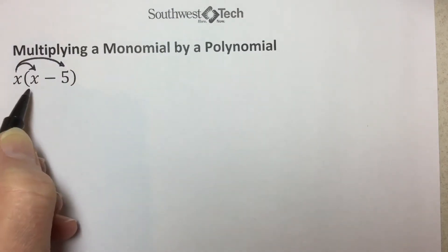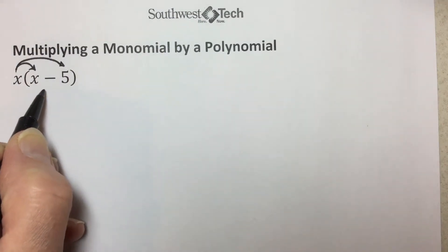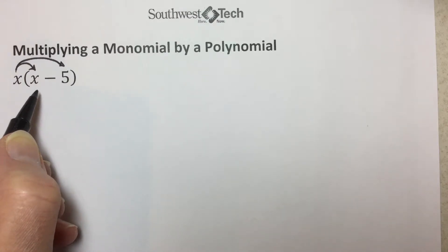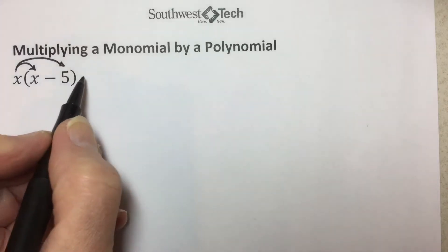We have the monomial times the, in this case a binomial, a special polynomial with two terms, but basically we are using the distributive property.